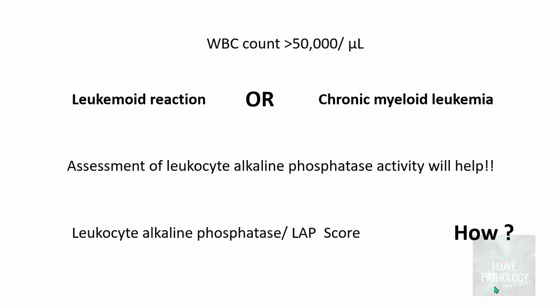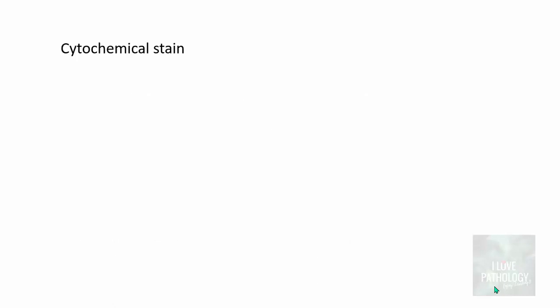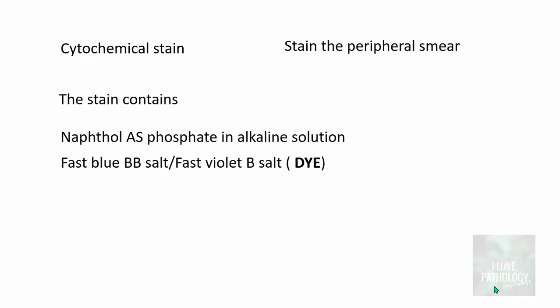This is done by means of a cytochemical stain performed on a peripheral smear. So imagine you have a case of leukemoid reaction or CML — you don't know which. You make a peripheral smear of that patient and perform this cytochemical stain. The substrates include naphthol-AS-phosphate in an alkaline solution, and a dye in the form of fast blue BB salt or fast violet B salt.